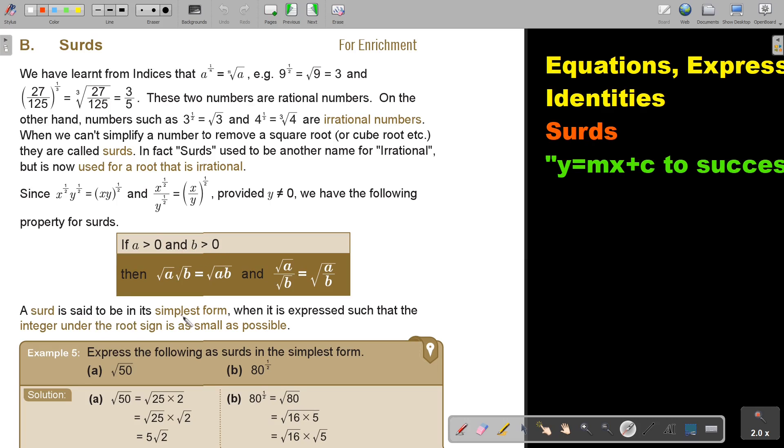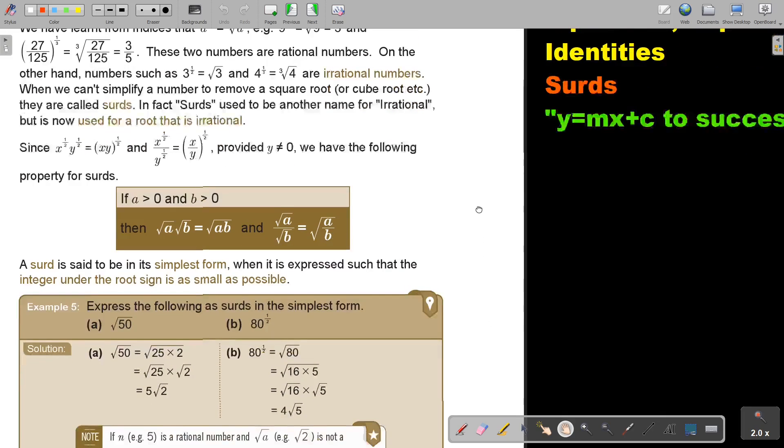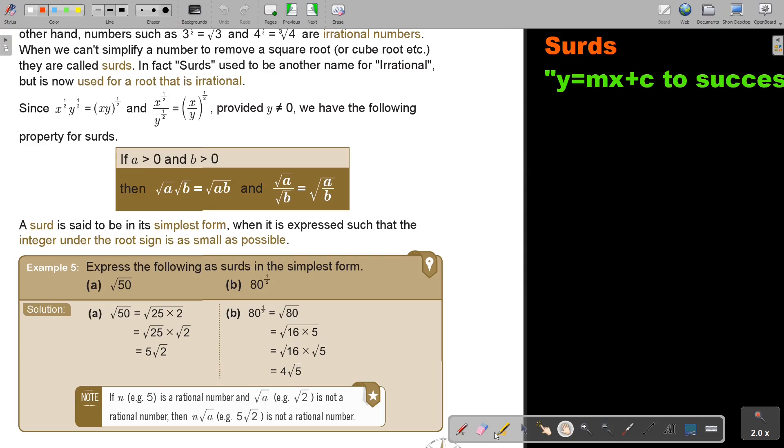A surd is said to be in its simplest form when it's expressed such that the integer under the root sign is as small as possible. And this is what they sometimes ask, and this is why I was putting it in the textbook.